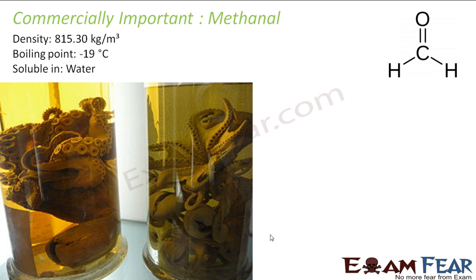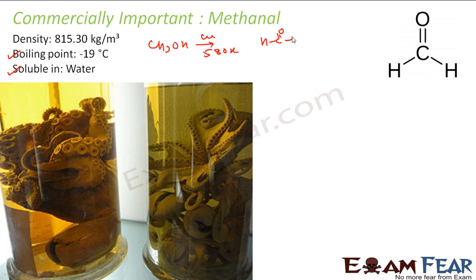Talking about methanal (formaldehyde): it is soluble in water and is a liquid with a boiling point of minus 90 degrees Celsius and density of 815 kg per meter cube. To prepare methanal, you take CH3OH (methanol) and pass its vapors over hot reduced copper at around 580 Kelvin. What you get is HCOH.